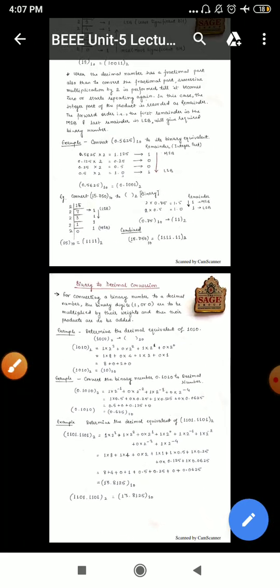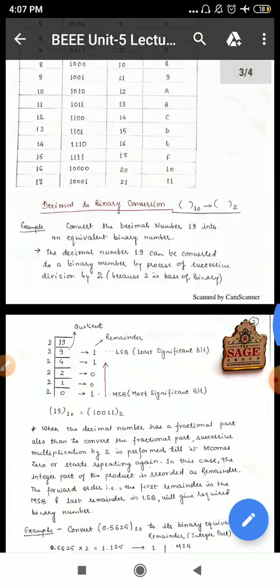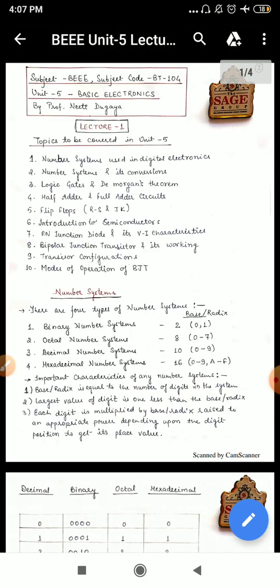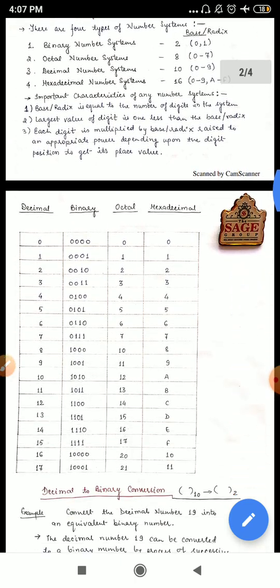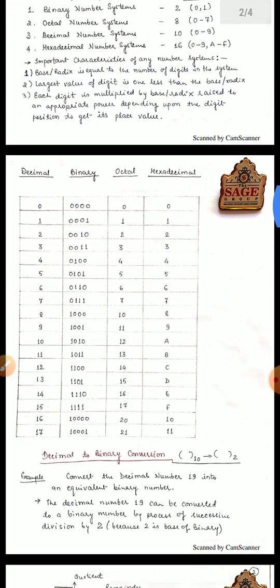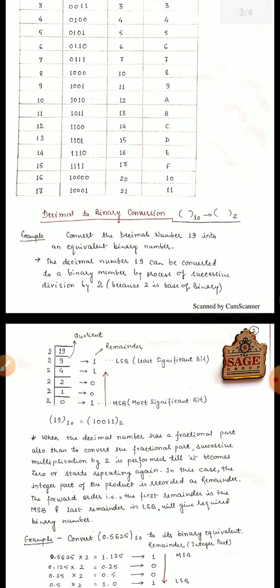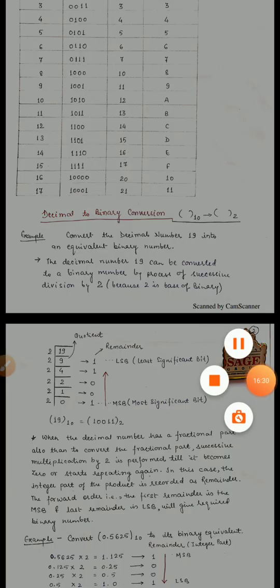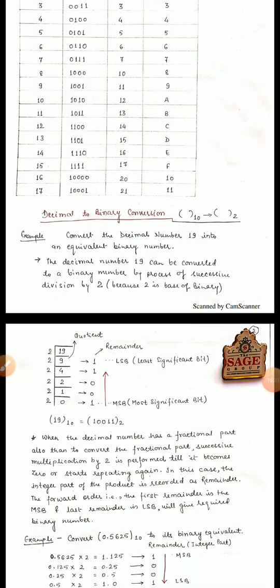So here we have completed the number system conversions — binary to decimal and decimal to binary — which is the start of our unit. In the next class we will do the remaining number systems: decimal to hexadecimal, hexadecimal to octal, binary, etc. We will complete all of these and discuss in the next class.